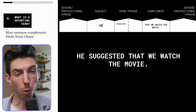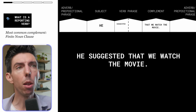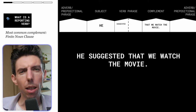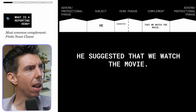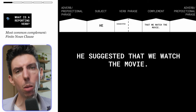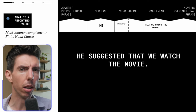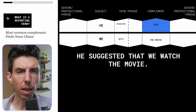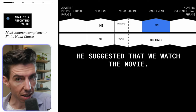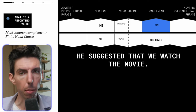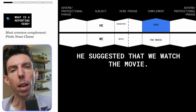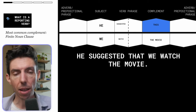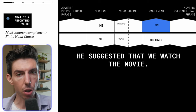The most common complement for all reporting verbs is what we call the finite noun clause. Take a look at this sentence: 'He suggested that we watch the movie.' When we really look at it, there are two clauses. He suggested something — that's the complement — and then we have another clause being projected through it, which is 'we watch the movie.' That clause 'we watch the movie' is being projected through the speech of the first clause.